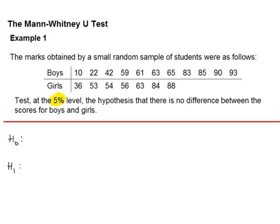In this example, we have the marks obtained by a small random sample of students. So you have the marks obtained for boys. And clearly from the table, there are more boys than girls who took this particular test. We're going to use the 5% level of significance to test whether there is any difference between the scores for the boys and girls.